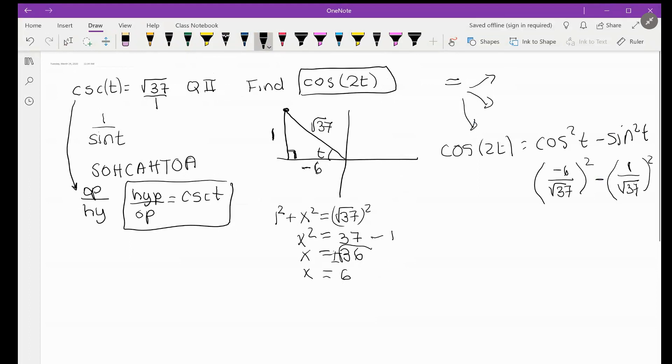So this first ratio becomes 36 over 37, and the next one becomes 1 over 37. So my final answer is 5/37. So that is the answer to cosine of a double angle, cosine of 2t.